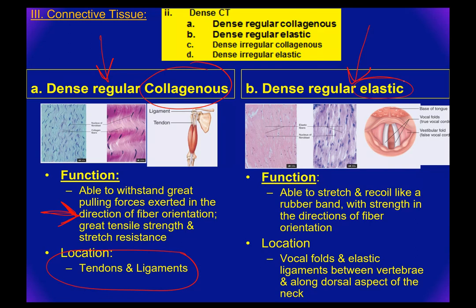Dense regular elastic connective tissue is able to stretch and recoil like a rubber band, with strength in the direction of fiber orientation. Your vocal cords are dense regular elastic connective tissue — that's why you can change the pitch of your voice, going up high or down low. Stretching them tight or letting them get really loose changes the pitch, and they snap back. It's like a guitar string: tighter means higher pitch, looser means lower pitch.